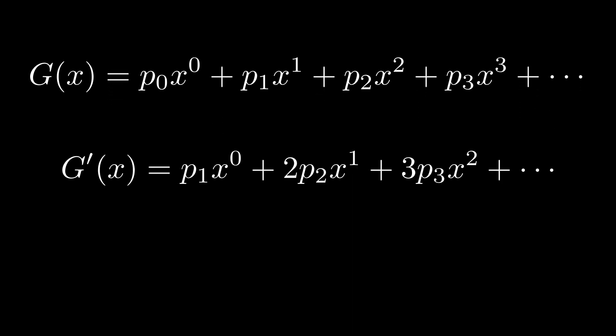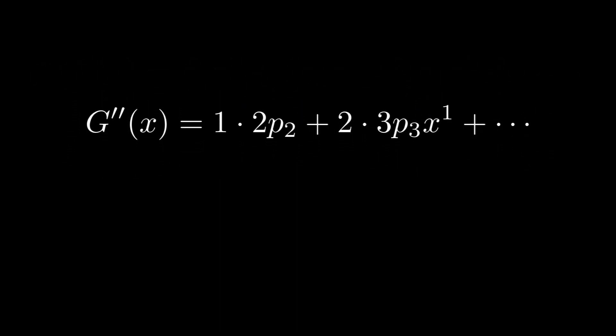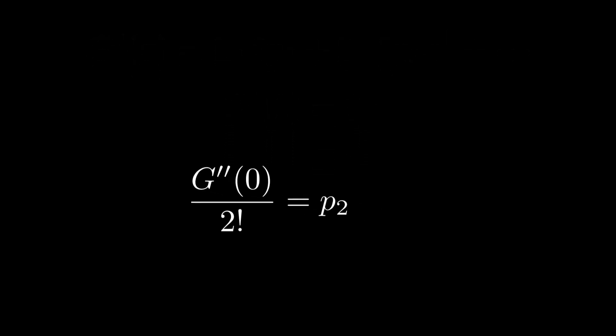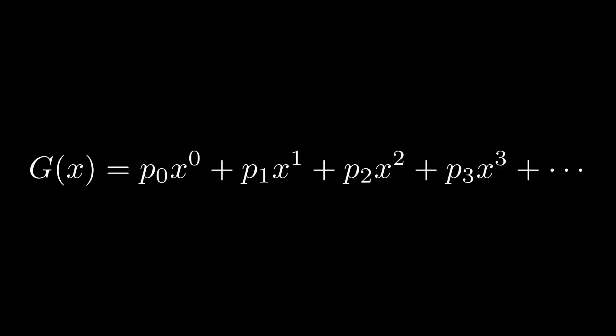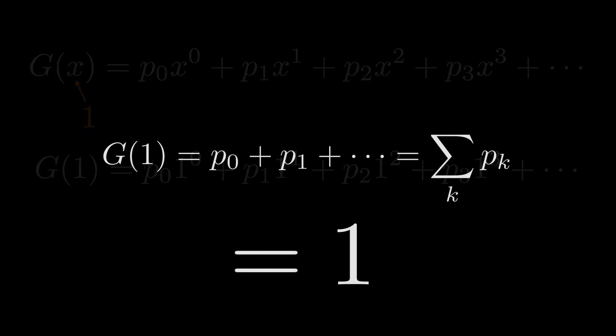For instance, you can remove all the terms except one by taking several derivatives. Then you can put 0 into x. If you divide the result with k factorial, then you get the probability value back. There are two other basic operations you can do. The first is simply putting 1 into x. What you get here is the sum of all probability values for all possible outcomes. That means this sum should be 1.